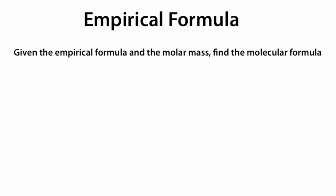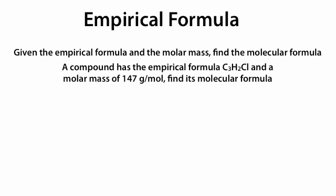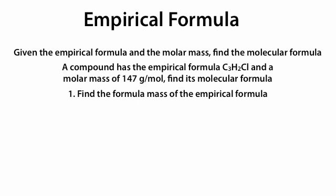Now we're going to look at the opposite process: given the empirical formula and the molar mass of a compound, find the molecular formula. Example: a compound has the empirical formula C₃H₂Cl and a molar mass of 147 grams per mole. Step 1: find the formula mass of the empirical formula C₃H₂Cl, which is 73.502 grams per mole.